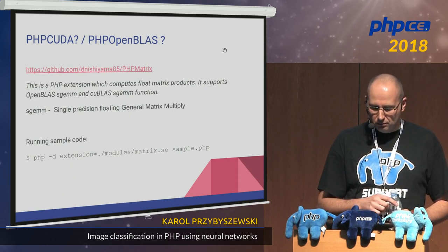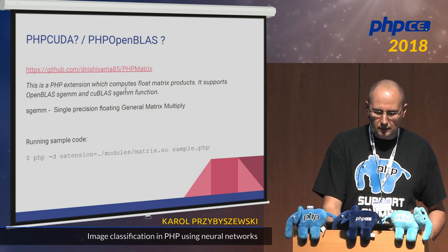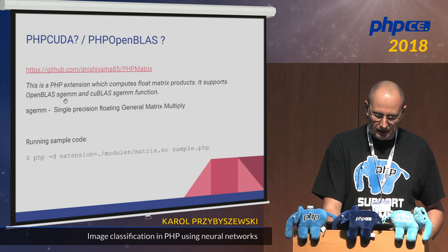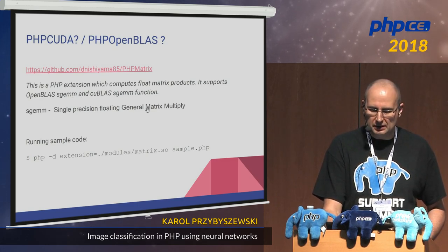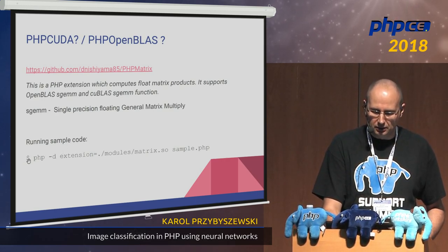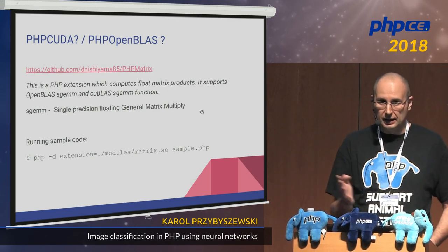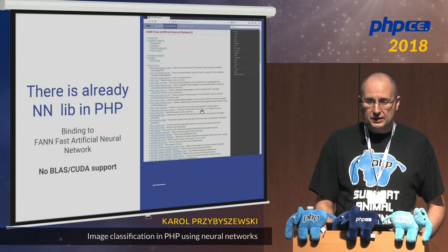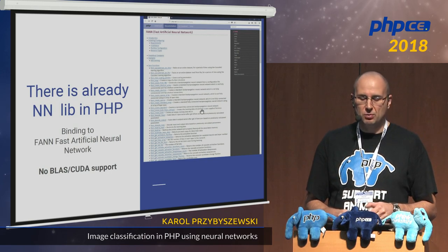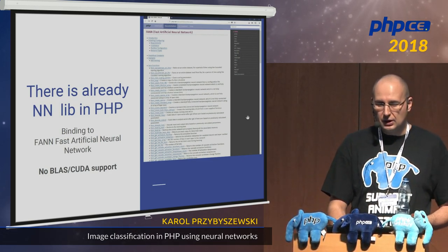There is a GitHub repo by a guy called Nishiyama from Tokyo. He wrote a PHP extension that computes float matrix products. It supports one function in OpenBLAS and in cuBLAS: SGEMM — single-precision floating-point general matrix multiply — the basic of all matrix operations. I did compile and use it, but couldn't use it in our example because only one function is implemented and I needed six operations. There is also an existing neural network library in PHP called FANN — a binding to Fast Artificial Neural Network — but there is no BLAS or CUDA support and the list of functions is quite long and not easy to use.